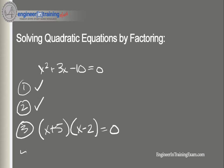Step four, solve: we can see that x is equal to negative 5 and x is equal to 2. So this quadratic equation has two solutions: x equals negative 5 and x equals 2.